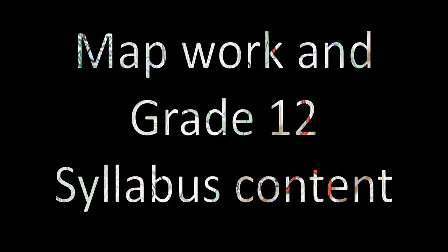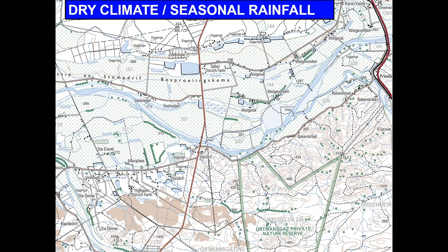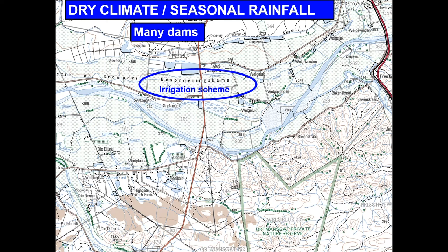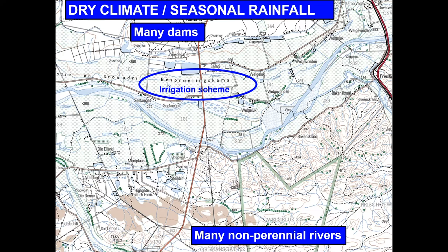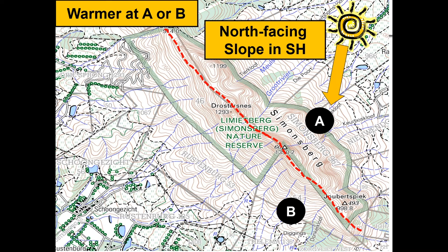Let's have a look at climatology. When asked to give evidence as to why an area has a dry climate or receives seasonal rainfall, look at the following: do we have dams in the area, do they have irrigation schemes, do they have many non-perennial rivers, and do they have furrows? We can also ask whether it is warmer at A or B. Remember, north will always be at the top of your map. Seeing that we are in the southern hemisphere, a north-facing slope at A means A will be warmer.